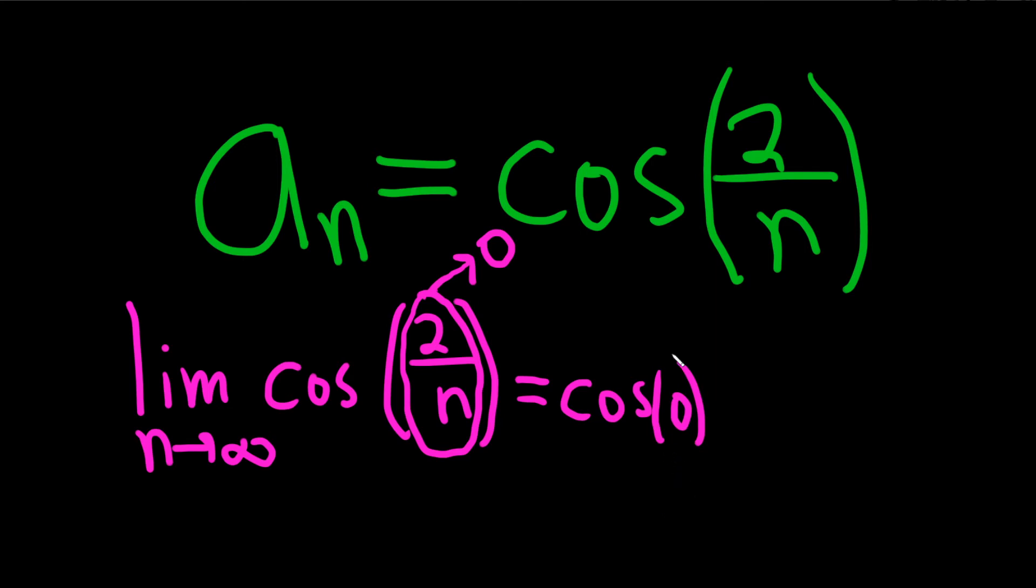Let's see, what's the cosine of 0? Well recall that on the unit circle, every ordered pair has the form cosine theta comma sine theta.